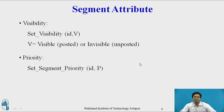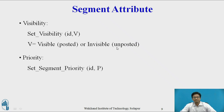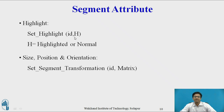Segment attributes include visibility: if we set visibility with the segment ID V, then the segment is posted if it is visible and unposted if it is invisible — that is, posted means displayed and unposted means not displayed. Next attribute is priority, set with the segment ID and P for priority. Highlight is set with the ID and H, indicating whether the segment is highlighted or kept normal. Set segment transformation covers size, position, and orientation, applied using a transformation matrix on the segment ID.